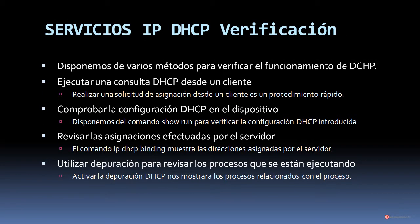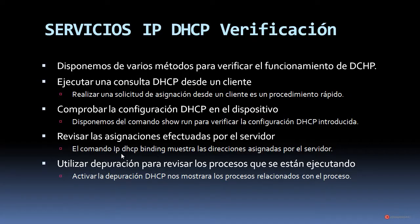También hemos estudiado anteriormente que es importante ese procedimiento de verificación. Disponemos de varios métodos para verificar el funcionamiento del servidor DHCP. Por ejemplo, ejecutar una consulta DHCP desde un cliente, que es un procedimiento rápido. También comprobar la configuración de DHCP en el dispositivo mediante el comando show run, que nos permite revisar la configuración de DHCP introducida. También revisar las asignaciones efectuadas por el servidor a través del comando show ip dhcp binding, que nos mostrará las direcciones asignadas, y utilizar depuración para revisar los procesos que se están ejecutando.